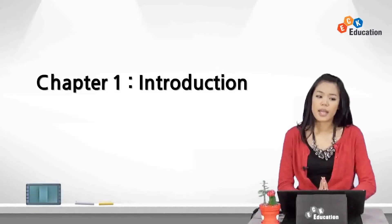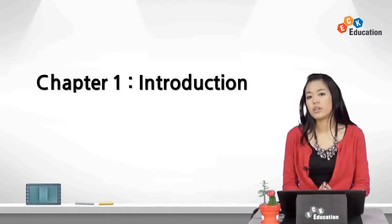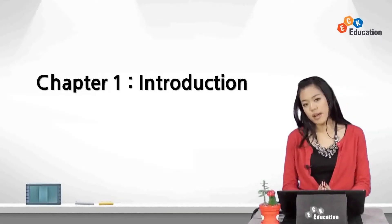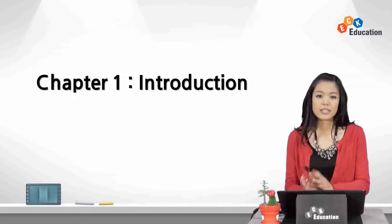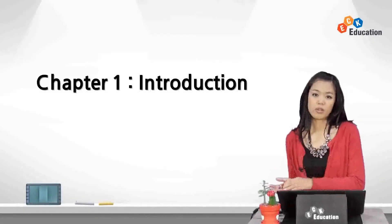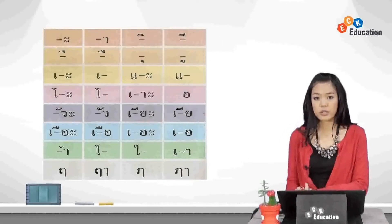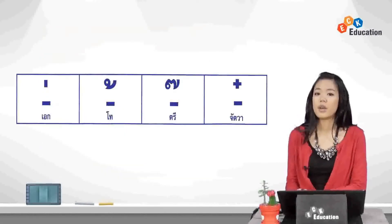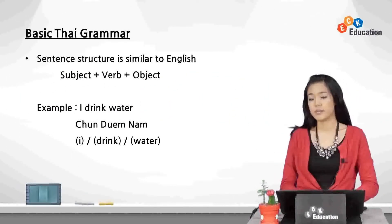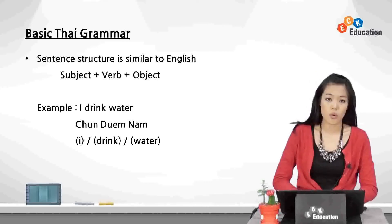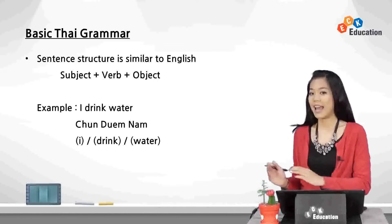Before we begin, I would like to introduce you to the basics that you should keep in mind when you learn Thai. Thai is a language spoken by 65 million Thais, and it is a tonal language where each syllable has its own meaning according to the tone. There are 44 alphabets and 32 vowels, and also 5 tones with 4 tone markers. For grammar, Thai has a similar sentence structure to English, which is subject, verb, and object.